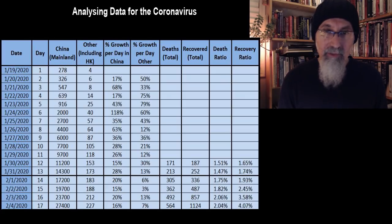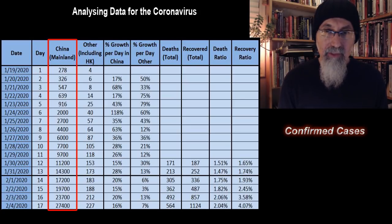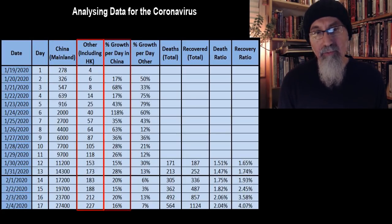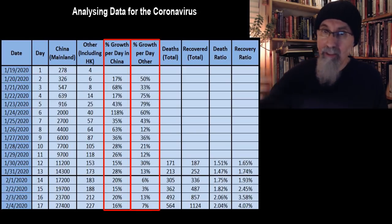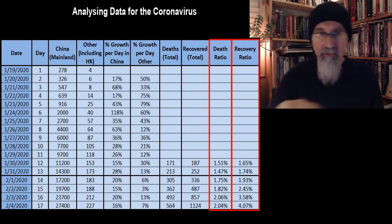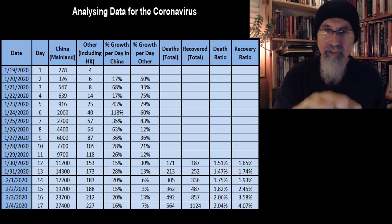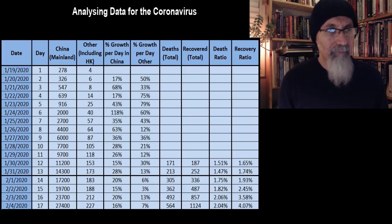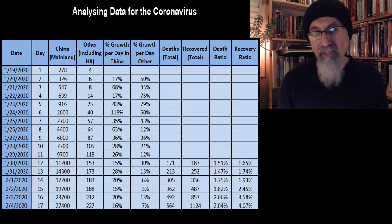We're going to graph every single one of these columns. The first one we're going to look at is the rate of infections — how many people are infected in mainland China and then outside of China. Then we're going to take a look at the percent growth per day in China, and the percent growth per day outside of China. We're going to look at the death rate, the death totals, and the recovered totals, and then the death ratio and the recovery ratio. All the raw data is available here. I had to do a little bit of calculation in each column — it's just percentages, not a big deal.